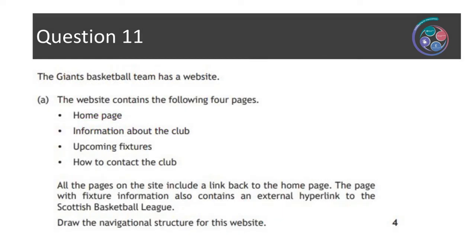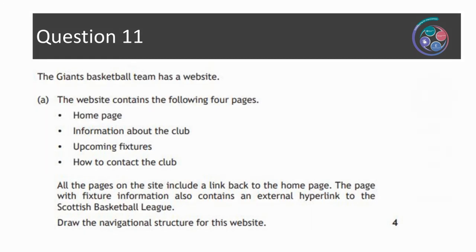Question eleven: the Giants basketball team has a website containing four pages — homepage, information about the club, upcoming fixtures, and how to contact the club. All pages on the site include a link back to the home page. The page with fixture information also contains an external hyperlink to the Scottish Basketball League. Draw the navigational structure for this website. It's a four mark question, so give yourself four to five minutes to process that information and get your navigational structure drawn. Pause the video now and give that a go.